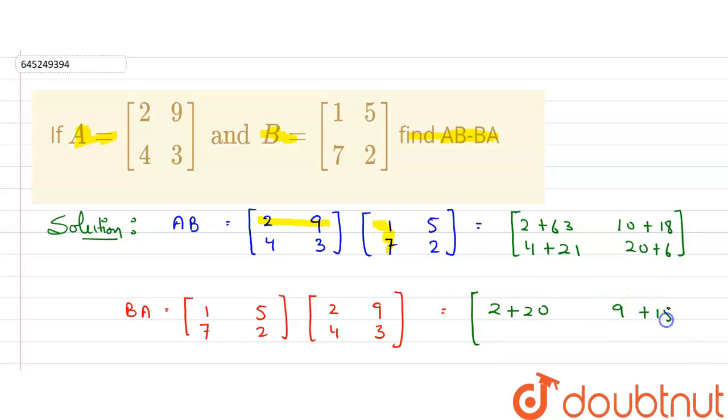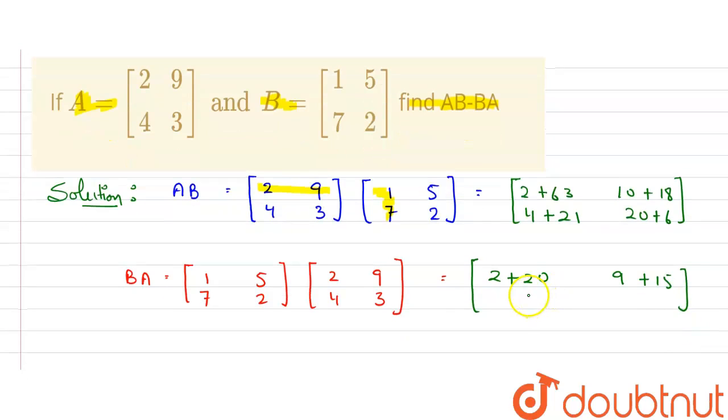9 plus 5 multiply 3, 15. Now come to next row. This will be 7 multiply 2, 14. 2 multiply 4, that will be 8. 7 multiply 9, 63. Plus 7 multiply, this 2 multiply 3, that will be 6 here.